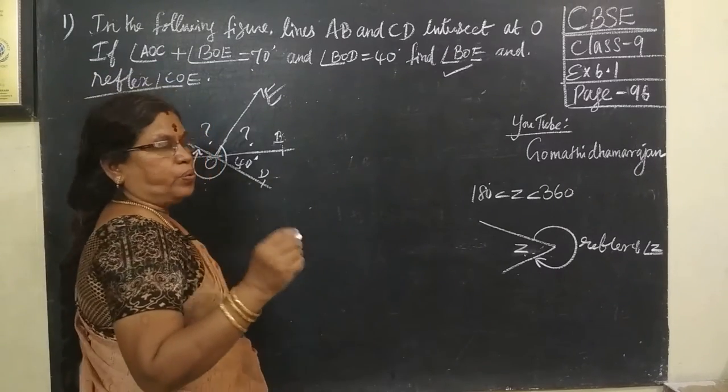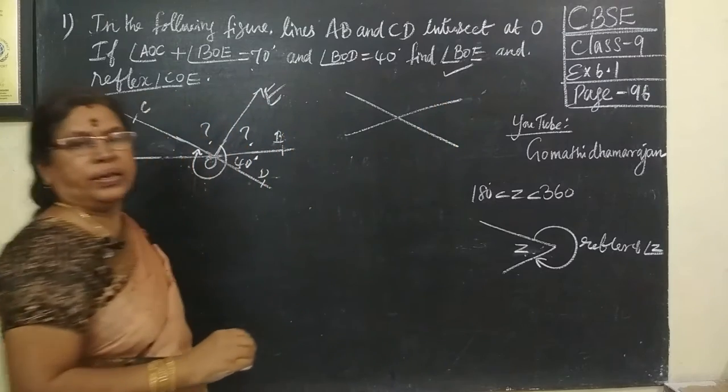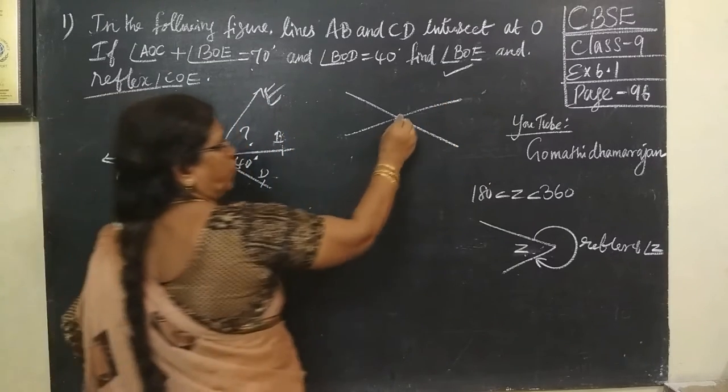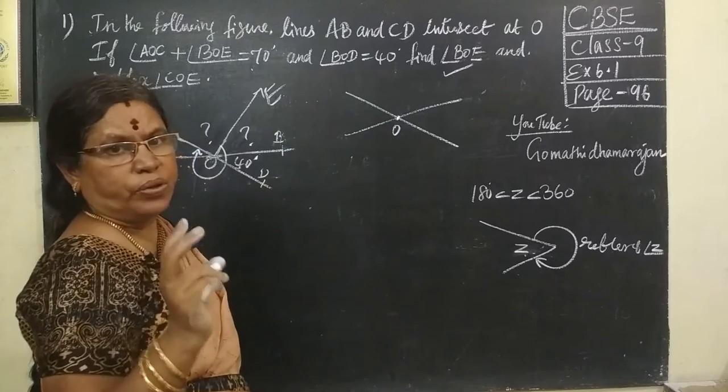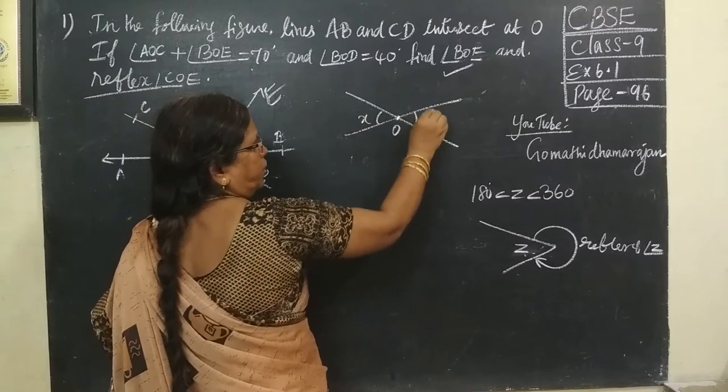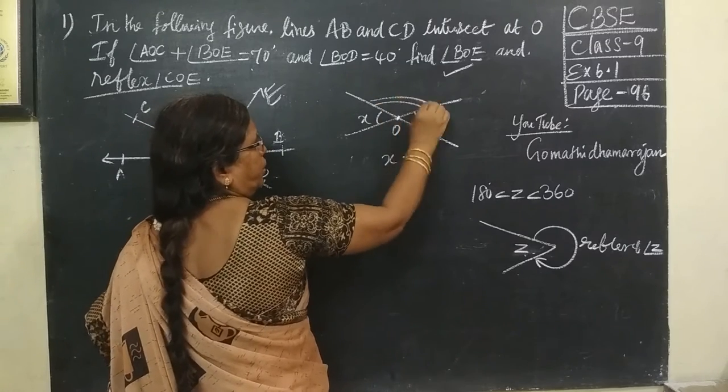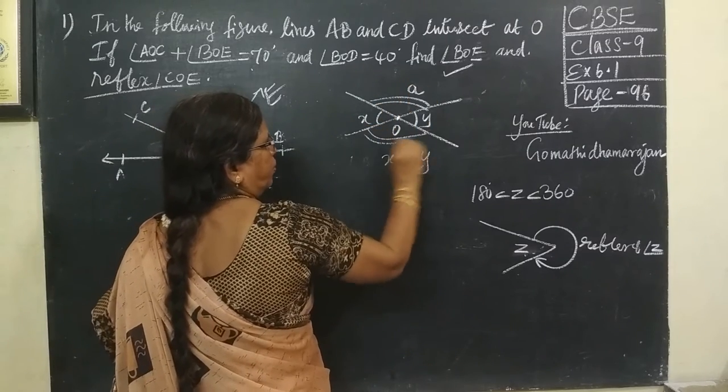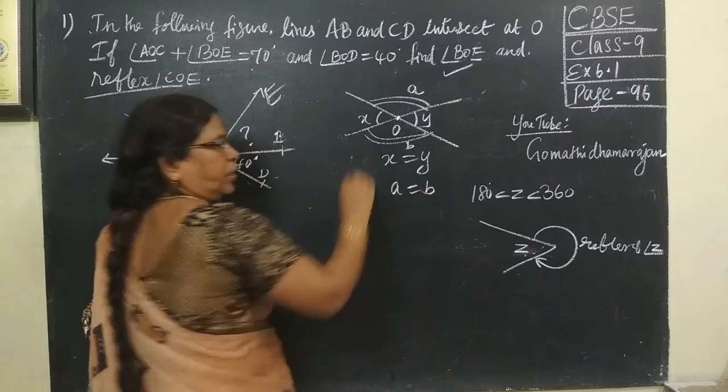And you must know vertically opposite angle. Vertically opposite angle means, if two lines intersect at a point O, at a common point O, we get two pairs of opposite angles named this and this. If it is X and Y means X is equal to Y and another pair, here A and B means A equal to B.